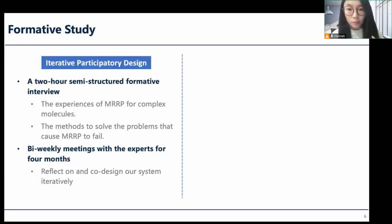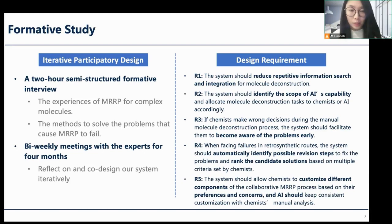To understand chemists' common practices and needs in MRRP for complex molecules, we adopted a participatory design approach. We invited six experts in the field of chemistry and conducted a two-hour semi-structured formative interview with each of them. Based on experts' feedback, we derived a set of design requirements and designed an initial version of a human-AI collaborative system supporting chemists and AI to design retrosynthetic routes for complex molecules together. Then we carried out bi-weekly meetings with these experts for four months. We invited them to reflect on and co-design our system iteratively, ensuring that our updated implementation meets the design requirements and addresses new questions that emerged in the design process.